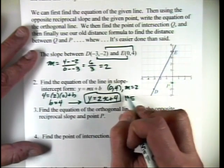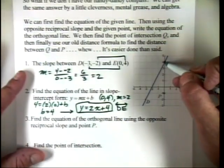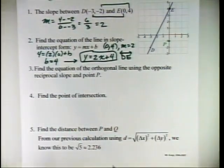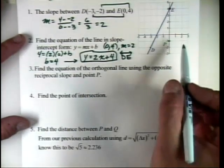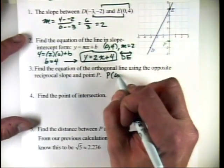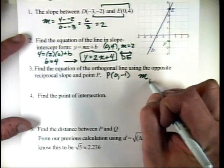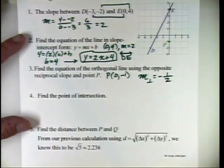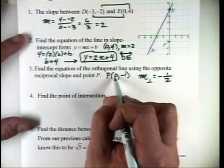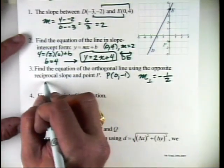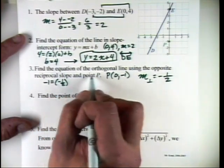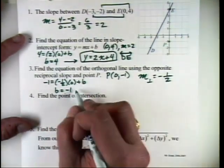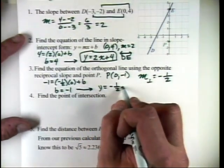Now I can find the equation of the orthogonal line using the opposite reciprocal slope and point P at 0, negative 1. The slope of my line was 2, so the perpendicular slope M-perpendicular is negative one-half. Using Y equals MX plus B with X equals 0, Y equals negative 1: I get negative 1 equals negative one-half times 0 plus B, so B equals negative 1. Writing that in slope-intercept form: Y equals negative one-half X minus 1.